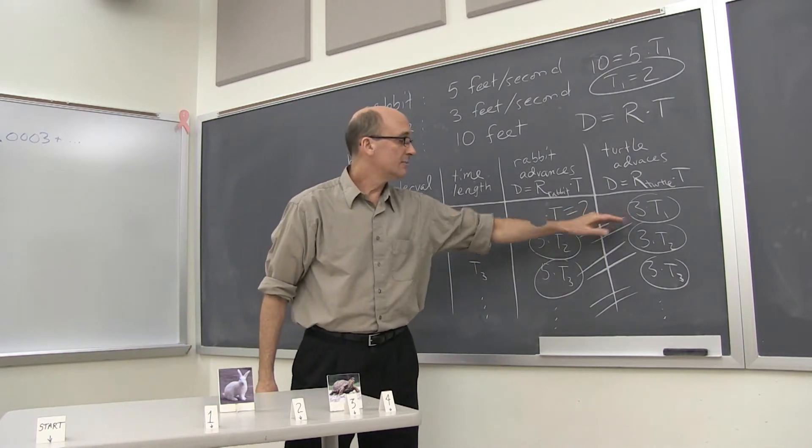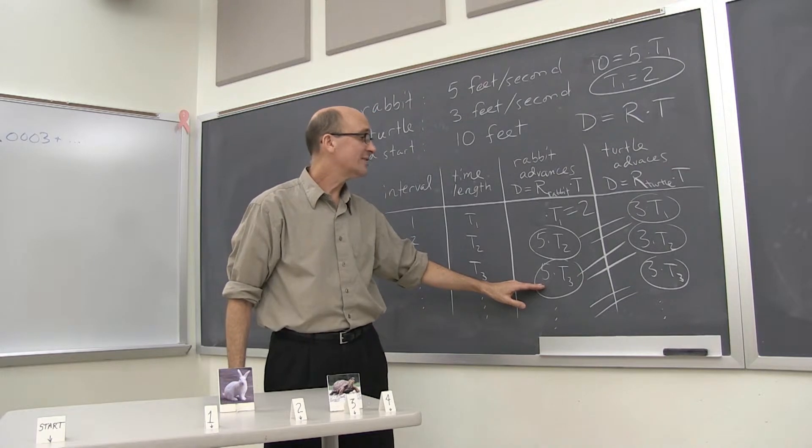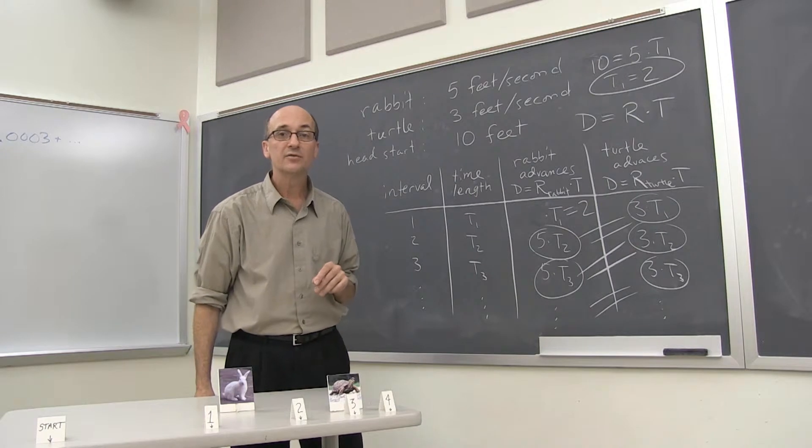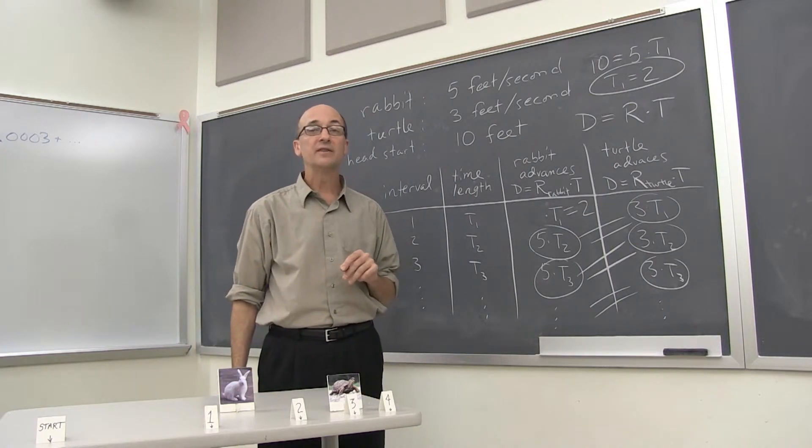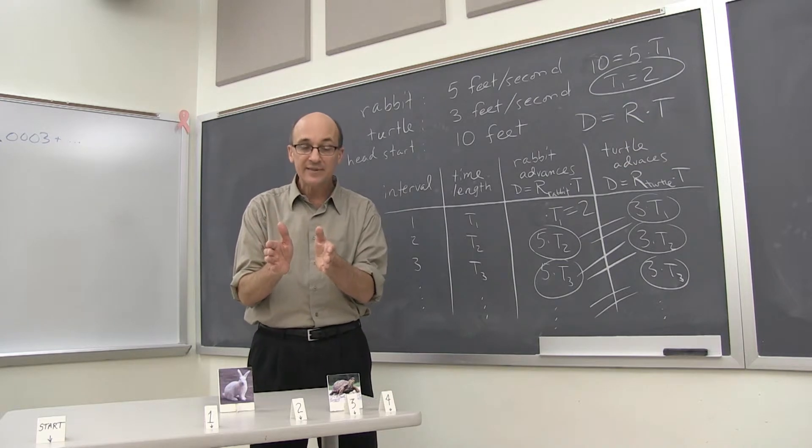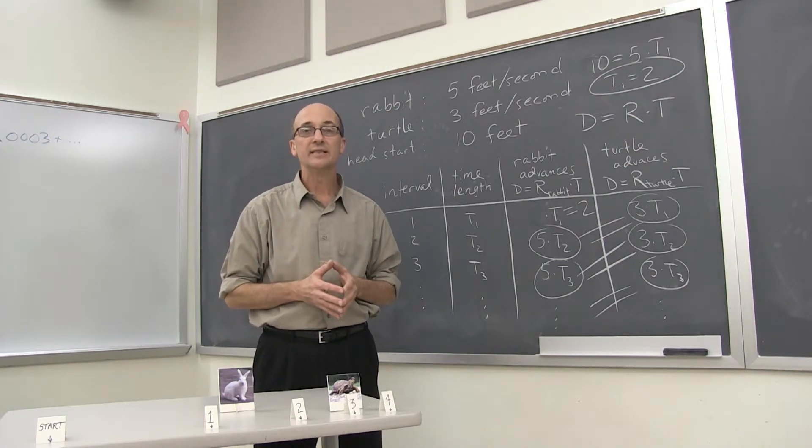5T2 is 3T1. 5T3 is 3T2. And so on. We can solve those for T's. And you come up with this very simple relationship. Each T, each successive T, is 3 fifths of the previous T.